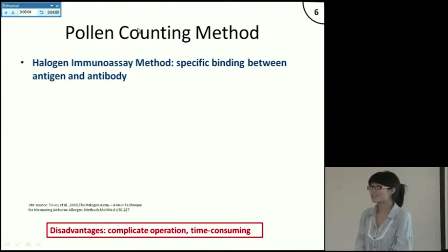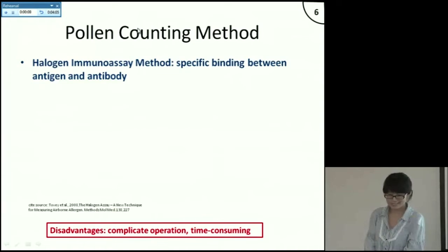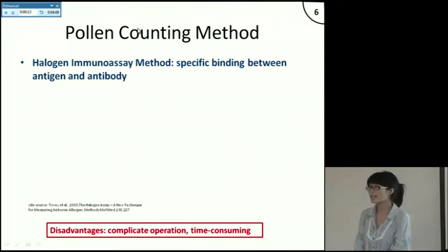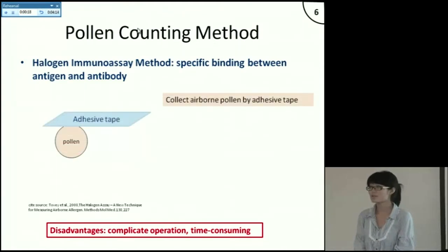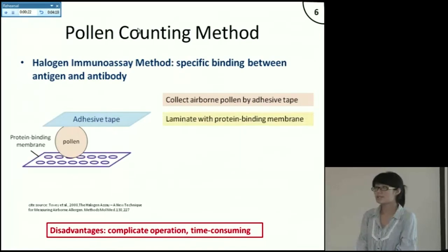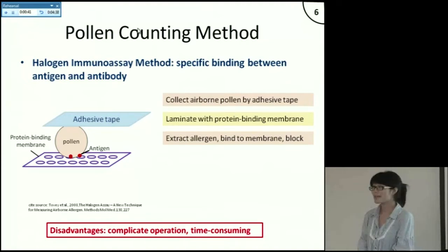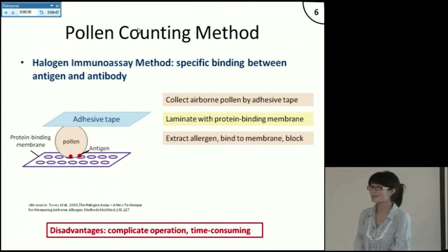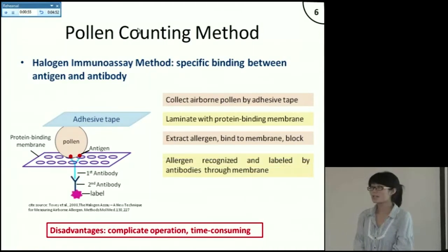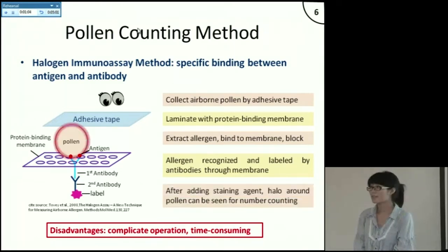A newly developed pollen counting method is called lateral flow immunoassay, which is based on the specific binding between antigen and antibody. In this method, an adhesive tape is used to collect sample pollens from the air. Then a protein binding membrane is laminated onto the tape to form a sandwich construction. An elution buffer is added to the pollen to extract the pollen allergen. After extraction, the protein binding membrane is blocked to prevent non-specific binding between antibodies and other protein binding sites on the membrane. The first antibody recognizes the pollen allergen, and the second labeled antibody is used to detect the first antibody, so after adding a staining agent the pollen can be visualized for counting.